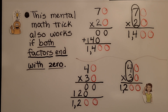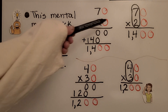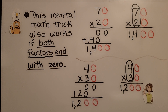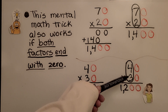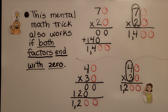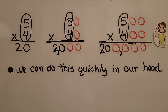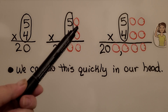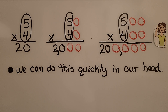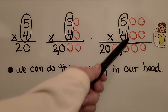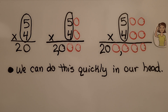This mental math trick also works if both factors end with zero. If we have 70 times 20, we think 2 times 7 is 14 and we have two zeros — it's 1,400. If we have 40 times 30, we think 4 times 3 is 12 and we have two zeros — it's 1,200. 5 times 4 is 20, so 50 times 40 would be 20 with two zeros — it would be 2,000. And 500 times 400 would be 20 with four zeros — it would be 200,000.